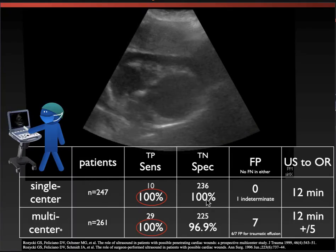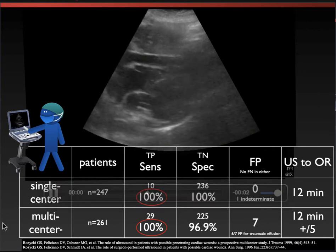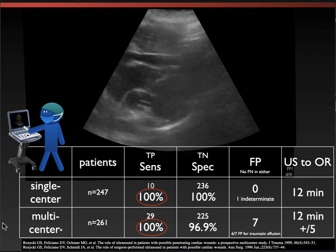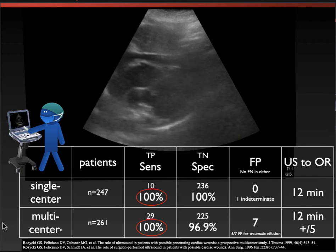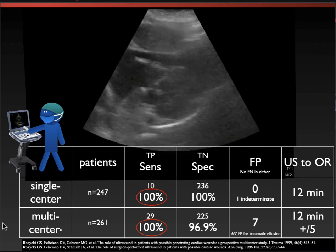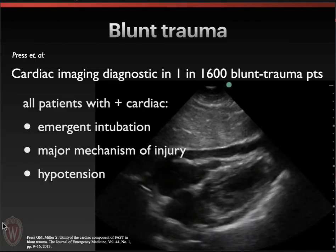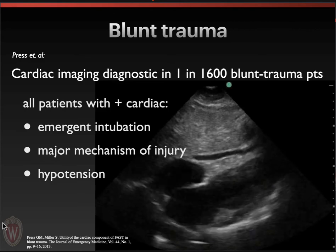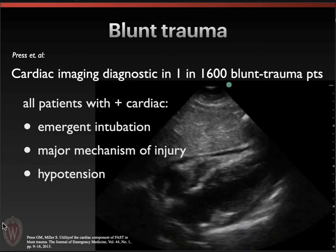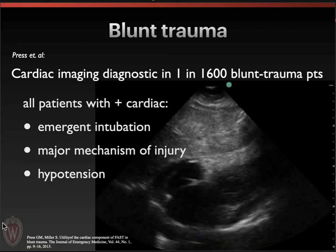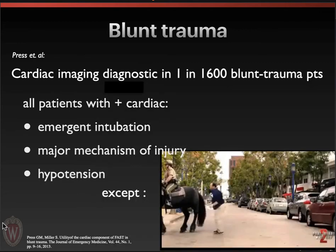In a study done over 20 years ago — first at a single center, then repeated multi-center — using ultrasound allowed patients to go from the door of the emergency department to the door of the operating room within about 12 minutes, plus or minus five, with very few false positives. For blunt trauma, it's less effective — patients who have blunt traumatic pericardial injury usually have other significant injuries and the heart injury is not their worst problem. That one in 1,600 blunt trauma patients with pericardial injury was a patient kicked by a horse.